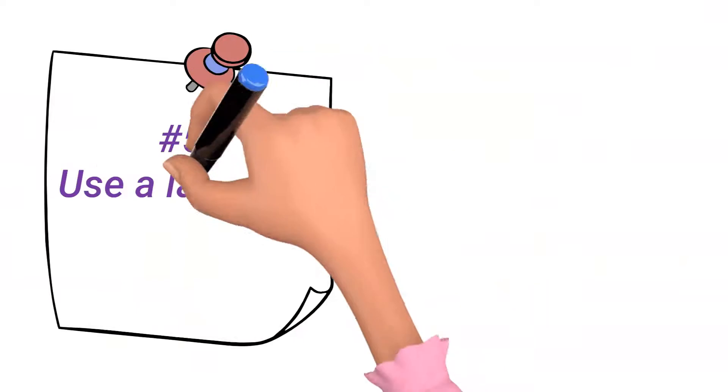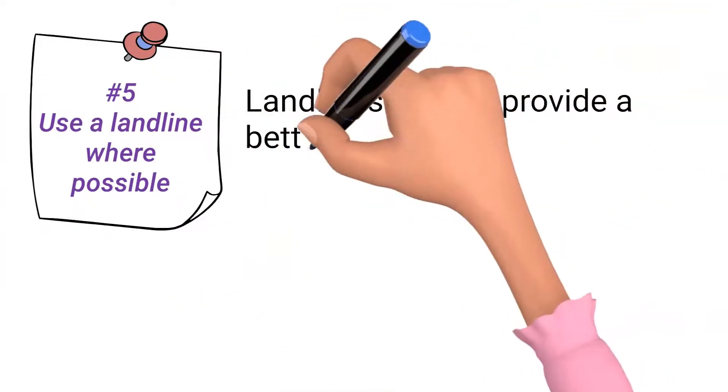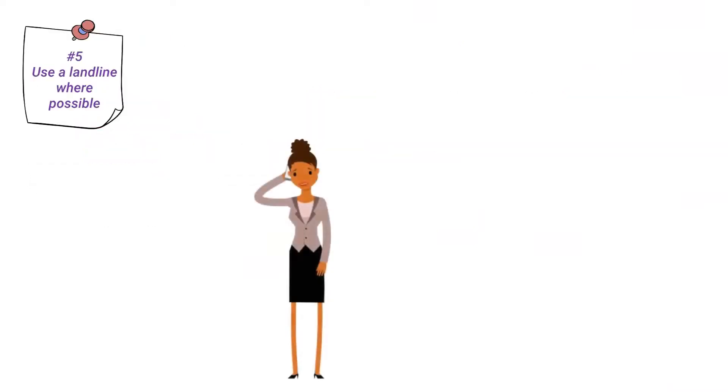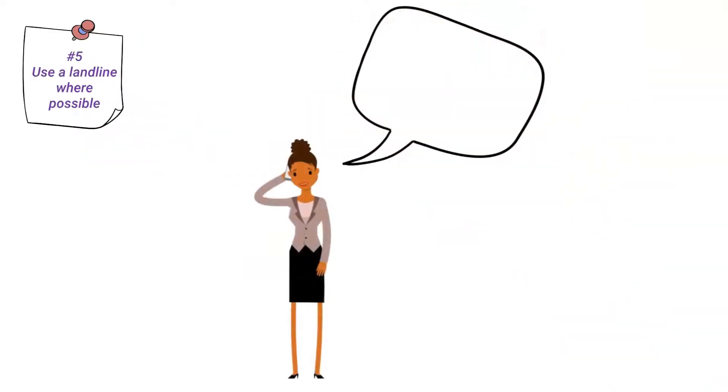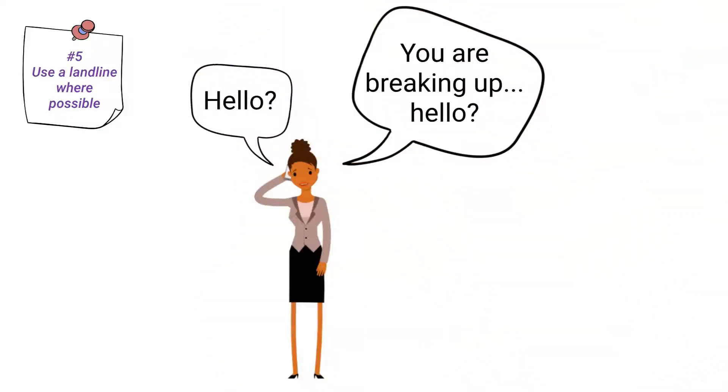Number 5. Use a landline where possible. Landlines usually provide a better connection than cell phones, and there is less chance of the call dropping out or losing battery power. This reduces the chance of having to prematurely end or reschedule the meeting.